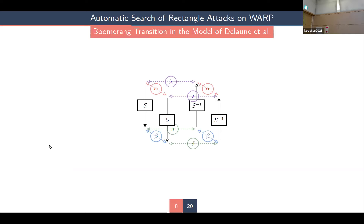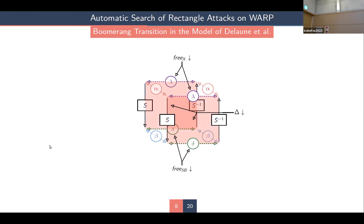In the model of Delon and co-authors, one boomerang transition is represented by four differences: alpha, lambda, beta, and delta, and two trails represented as encryption and decryption. In the encryption phase, three variables are used: big-delta indicates if the transition is active; 3x and 3sb indicate whether the input or output differences need to be fixed or known to compute the distinguisher probability. The same variables exist for the lower states: 3x_low, big-delta_low, and 3sb_low.